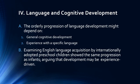There is an orderly progression of language development, and it seems to depend on basic general cognitive development and experience with a specific language — cognitive and language development go hand in hand. Often as one developmental timeline advances, so does the other. For example, girls are often ahead of boys in some cognitive aspects because their language develops much sooner, so there are clear relationships between language acquisition and cognitive development.